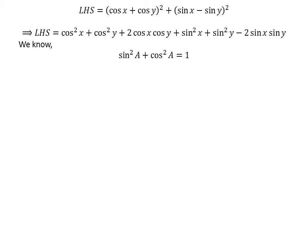We know the famous trigonometric identity: square of sine of a plus square of cosine of a is equal to 1.